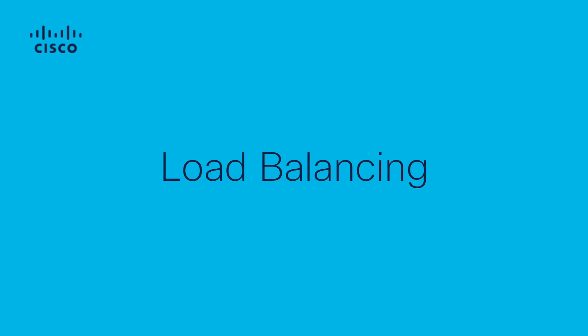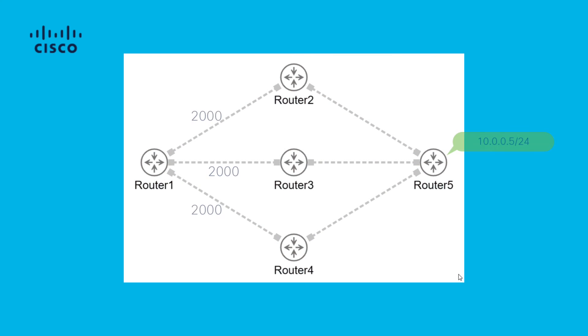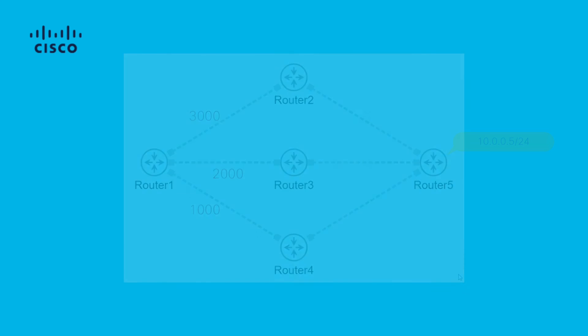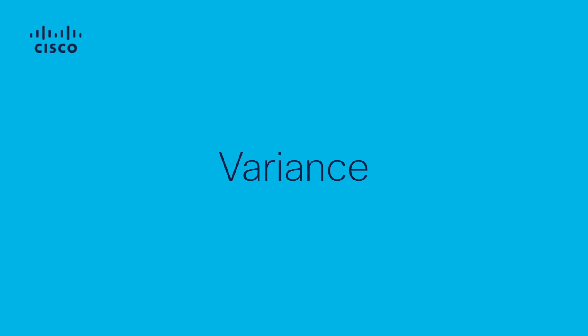Load balancing is the capability of a router to distribute traffic over all the router network ports that are the same distance from the destination address. Load balancing increases the utilization of network segments and increases effective network bandwidth. There are two types: equal cost path, which applies when different paths to a destination have the same metric value, and unequal cost path, when different paths have different metric values. EIGRP is the only IGP that has the capability to use unequal cost load balancing between different paths, and for this we use the variance feature.